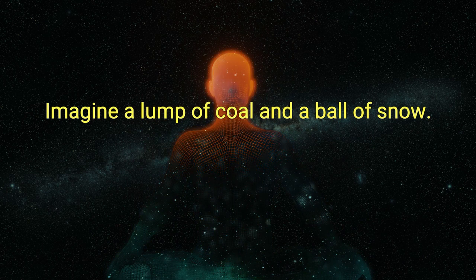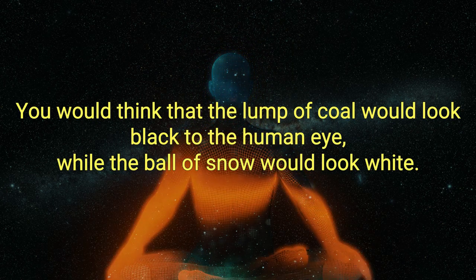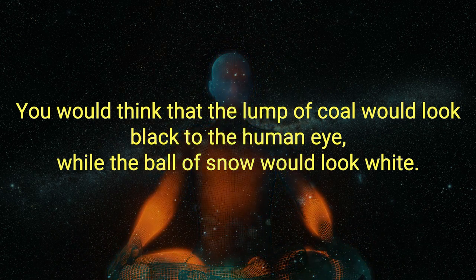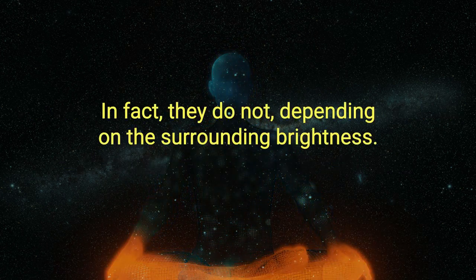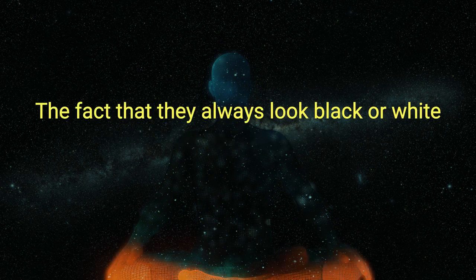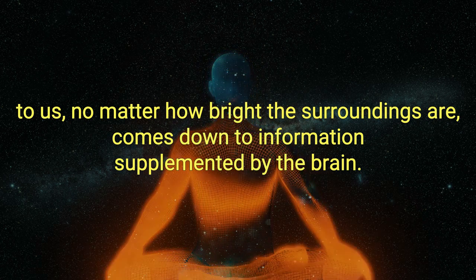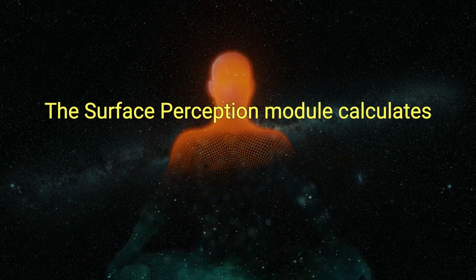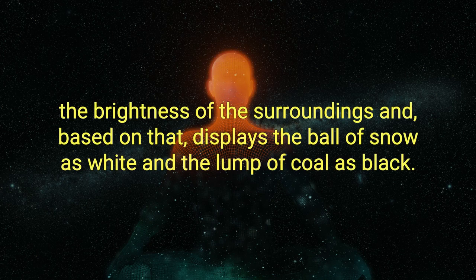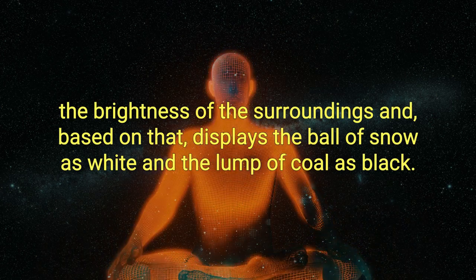Imagine a lump of coal and a ball of snow. You would think that the lump of coal would look black to the human eye, while the ball of snow would look white. In fact, they do not, depending on the surrounding brightness. The fact that they always look black or white to us, no matter how bright the surroundings are, comes down to information supplemented by the brain. The surface perception module calculates the brightness of the surroundings and, based on that, displays the ball of snow as white and the lump of coal as black.